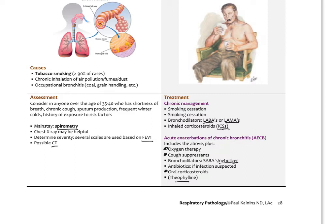The most common cause of chronic bronchitis is tobacco smoking — over 90% of patients have a history of tobacco smoking. However, some patients who never smoked developed it through occupational exposure, such as coal miners and grain handlers. Any chronic inhalation of air pollution, fumes, or dust can cause it. In cities with heavy air pollution, years of breathing particulate matter can create significant inflammatory processes in the lungs that may predispose one to chronic bronchitis.